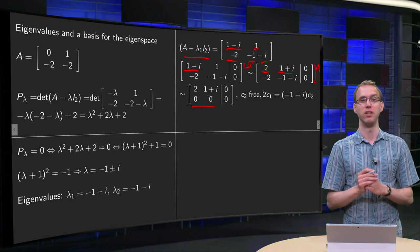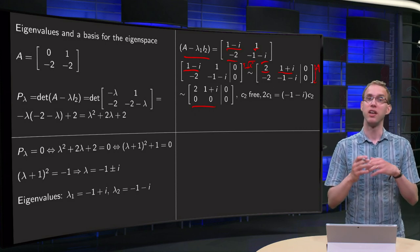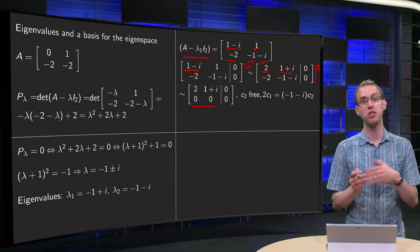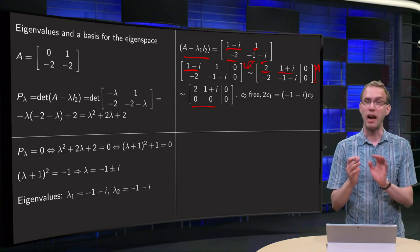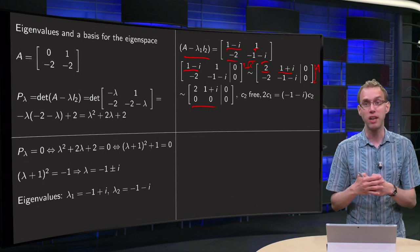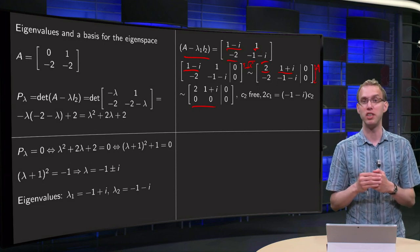As we should have, because we have eigenvectors. If we wouldn't have a row of zeros, we would only find a trivial solution: c2 equals 0 and c1 equals 0. And that cannot be an eigenvector. So you know in advance that you should get a row of zeros.